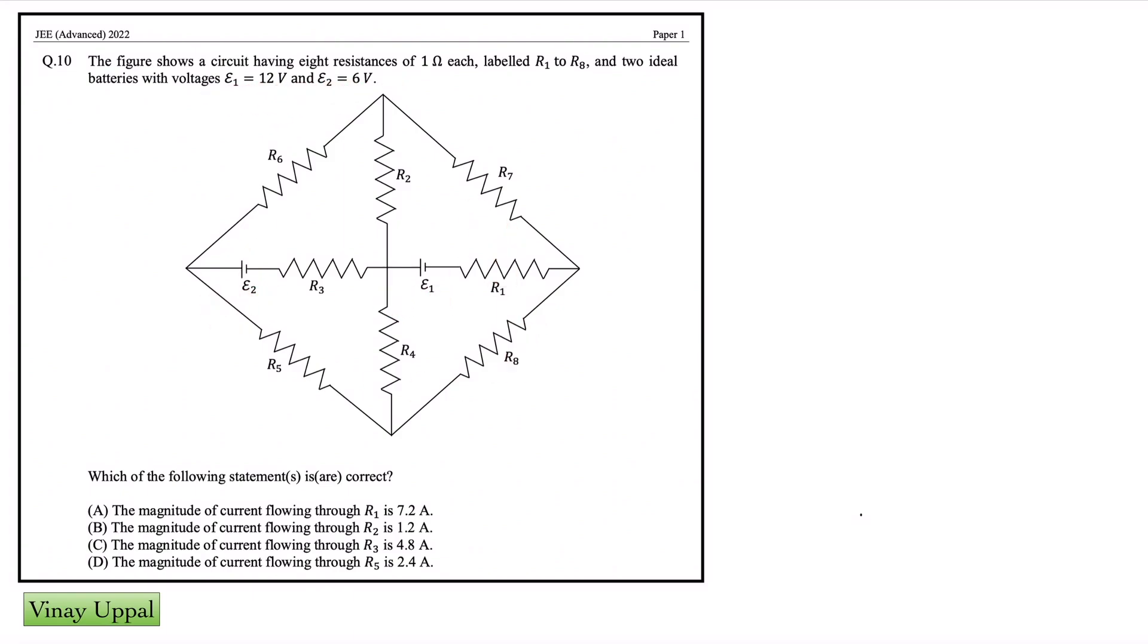So here there are 8 resistances, here there are 2 batteries. The resistances are 1 ohm and the question is asking us to find the current through some resistances. First of all, we have to see symmetry. There are 3 resistances above and below. You can see that the central axis above and below is exactly the same circuit. Therefore, you should be able to realize that R6 and R5 will be in parallel.